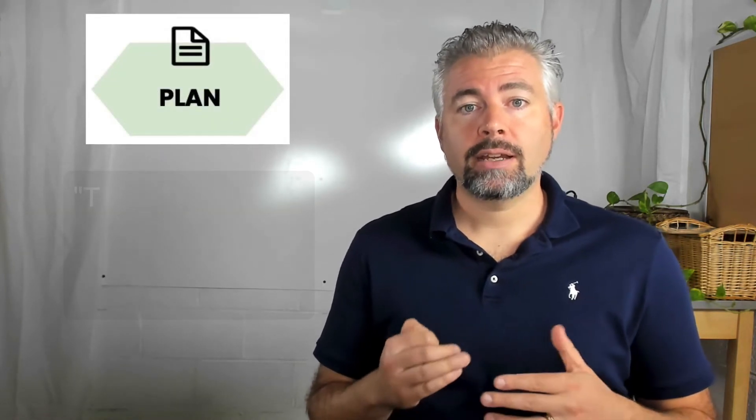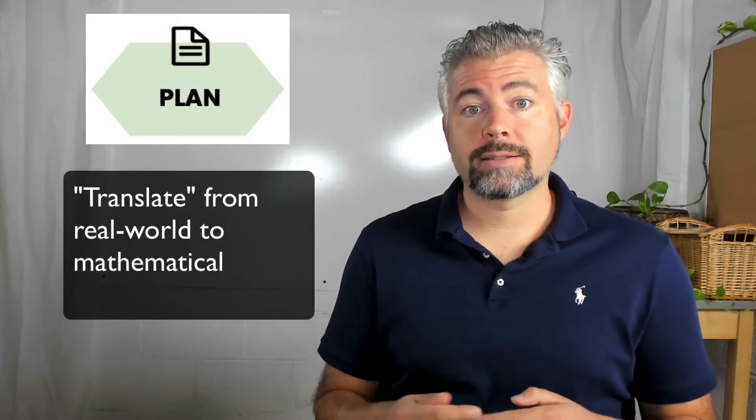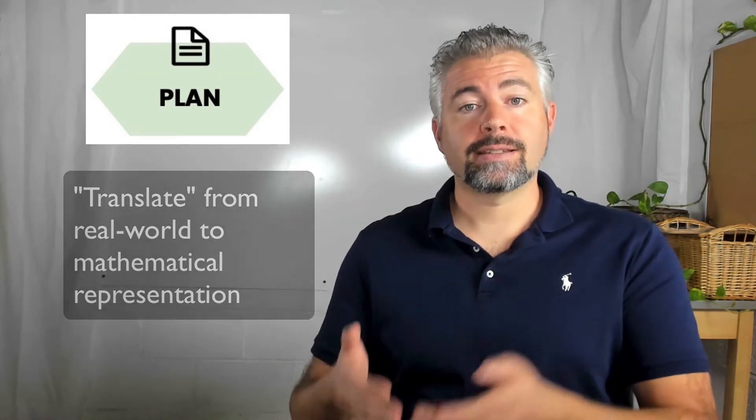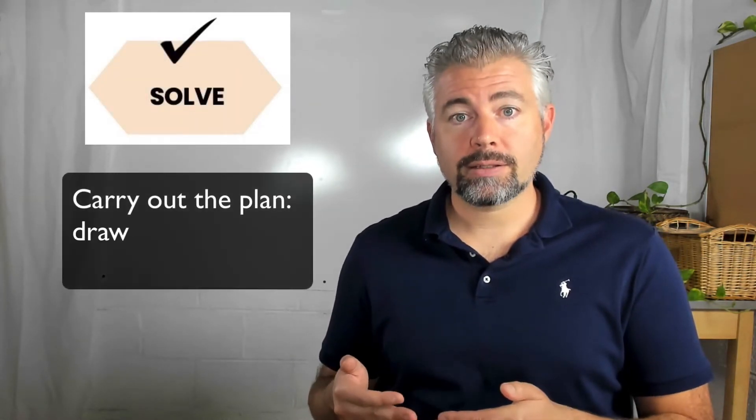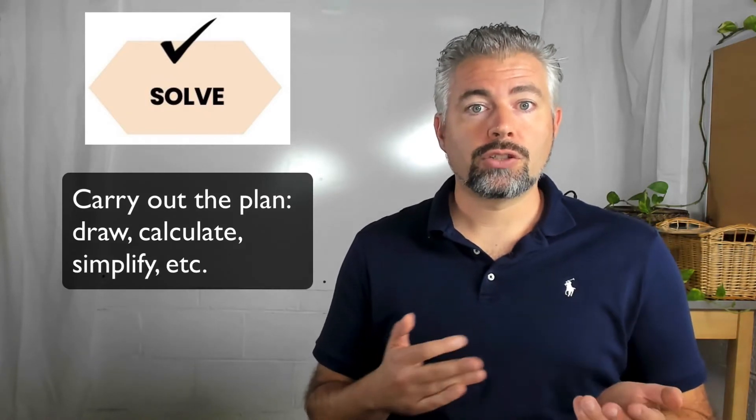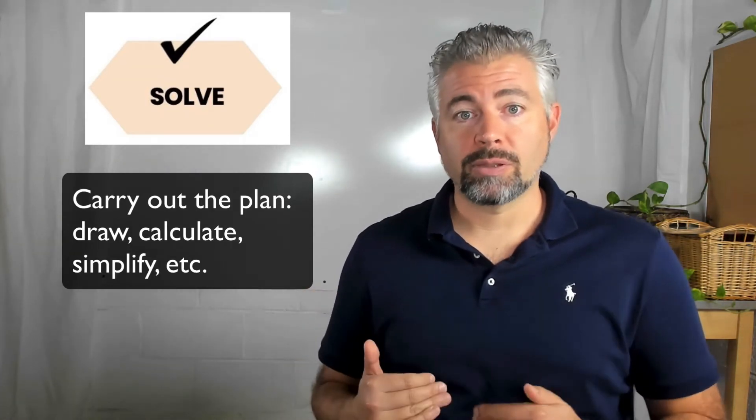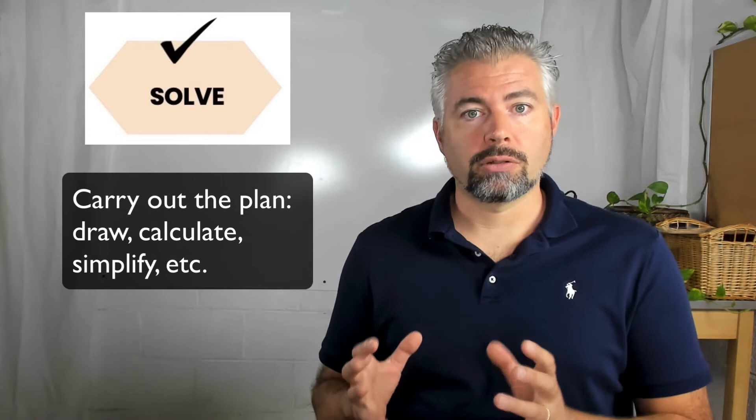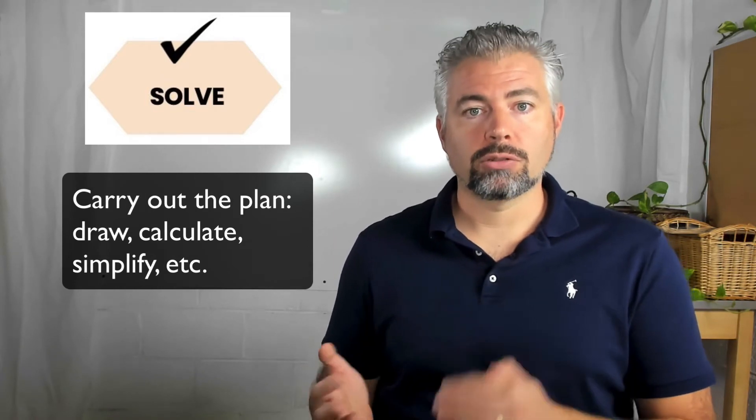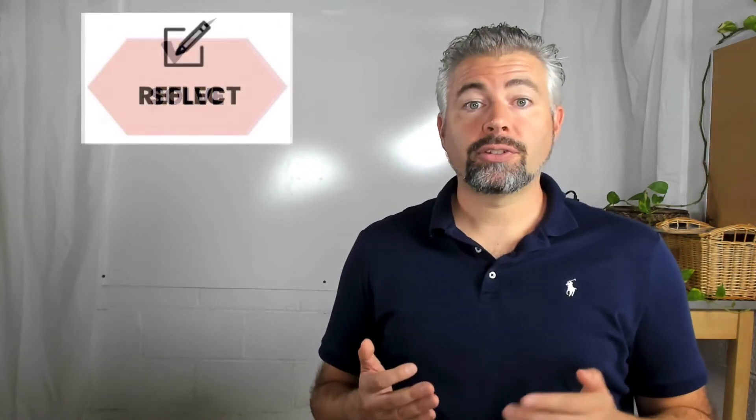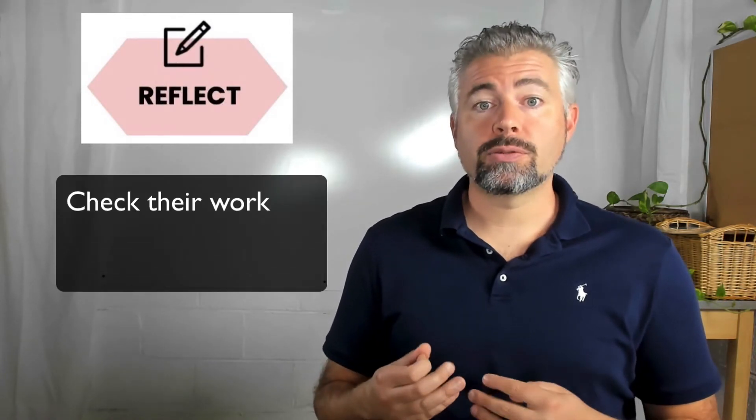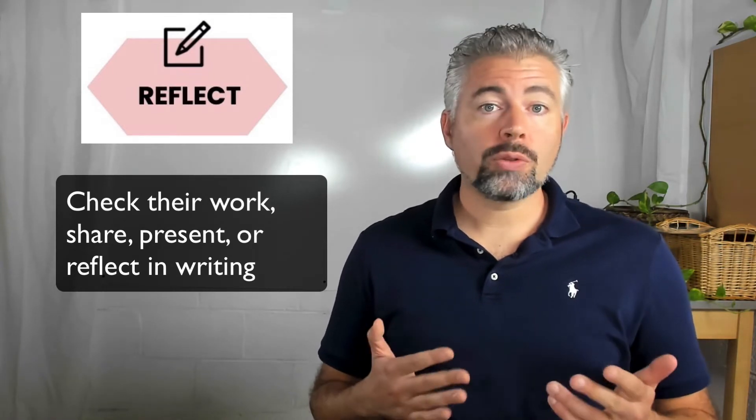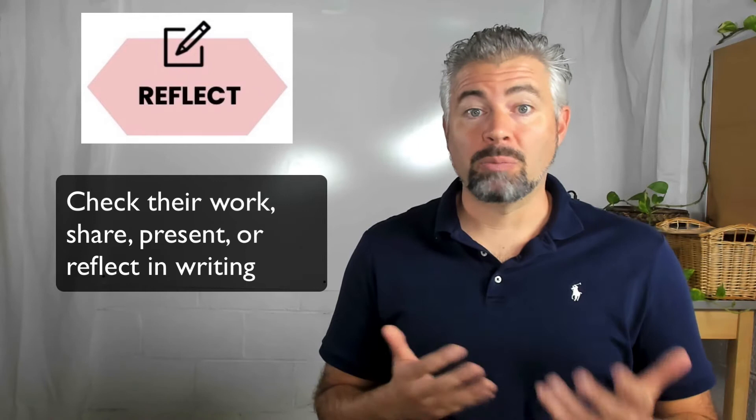Next is plan. This is where students actually, I think of it as translation. They're translating from a real world scenario to a mathematical representation that they can then solve in the solve phase. So if they choose write an equation, the solve is to write and simplify the equation. If they choose a method like draw a picture, the solve is actually drawing the picture and showing how that picture creates a solution. The final step is reflect or look back. This is where students check their work, share with peers or present to the class, or they can write a short reflection about how they solve the problem and what they learn from it.